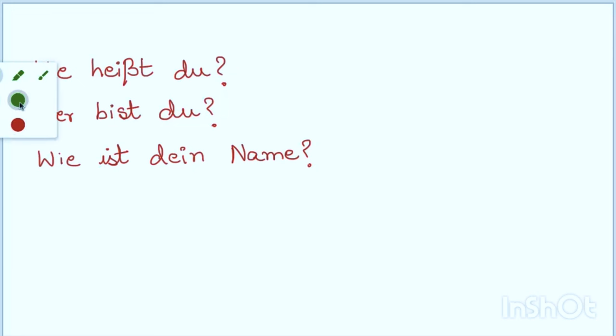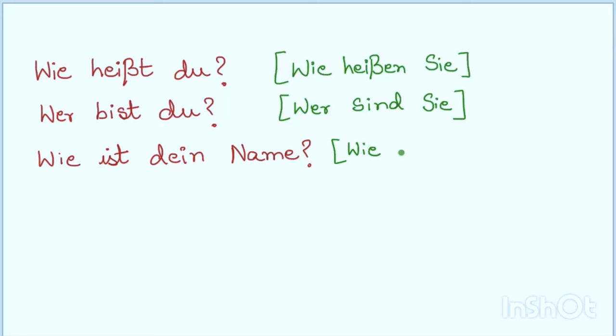Let me also write the alternative so that it becomes more easy to understand. Wie heißen Sie, Wer sind Sie, and lastly, Wie ist Ihr Name. This is the formal form, this is the informal form. Wie heißt du, Wer bist du, Wie ist dein Name. And all of these questions mean, what is your name? If you wish to again literally translate as I mentioned before, this is what are you called, who are you, and what is your name?